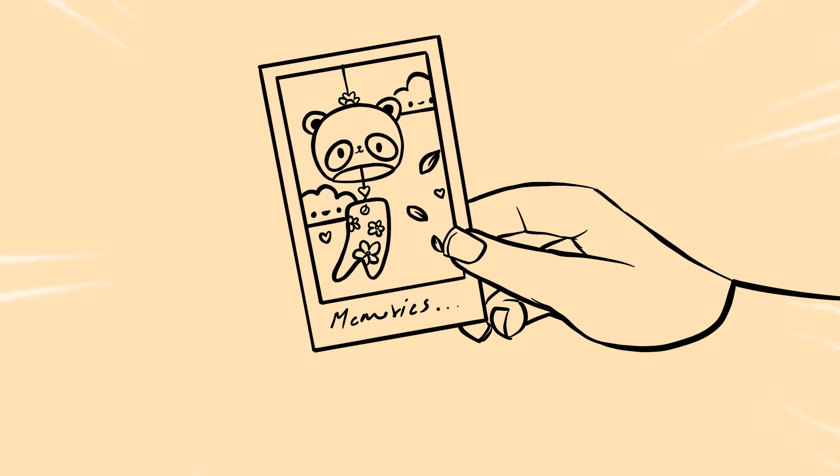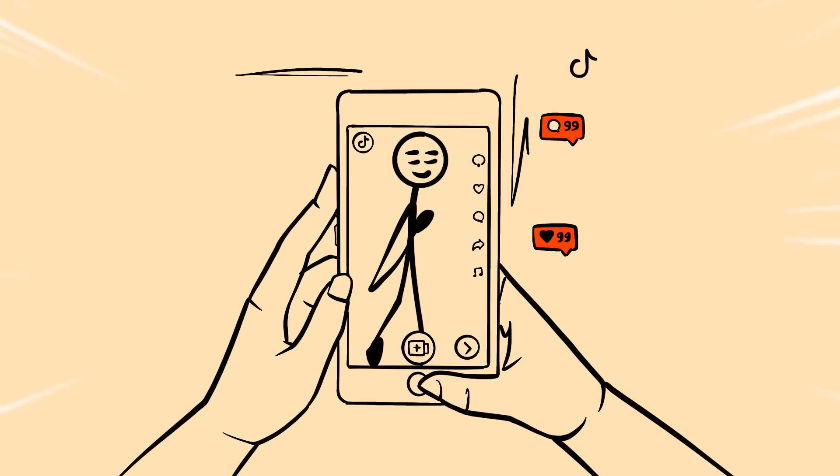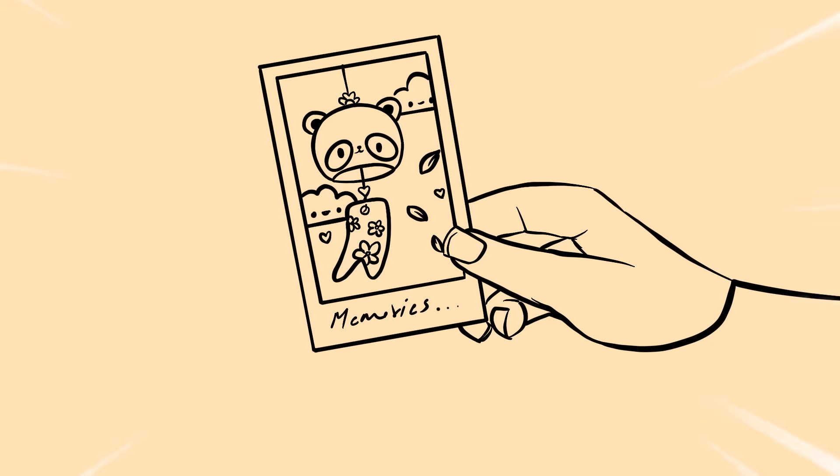This creates what scientists call temporal fragmentation. Think of it like this. Normal memories are like full photographs—clear, distinct, easy to remember. But phone time creates thousands of partial exposures that never fully develop into real memories.